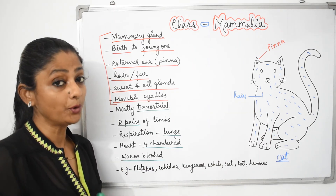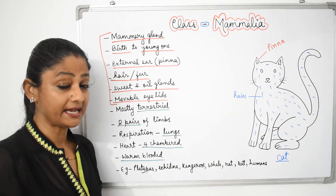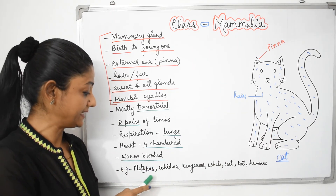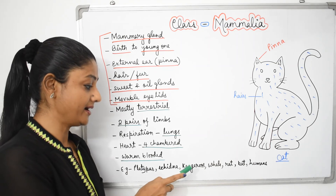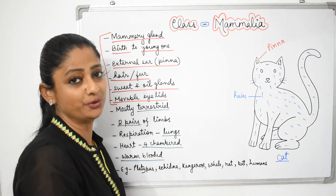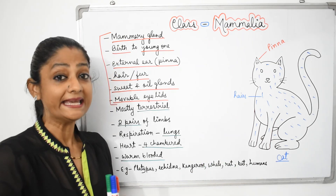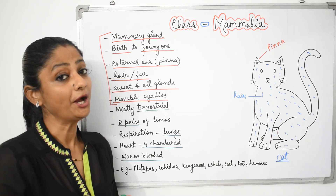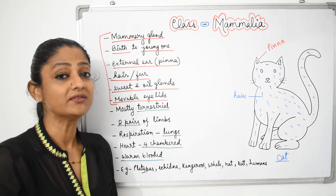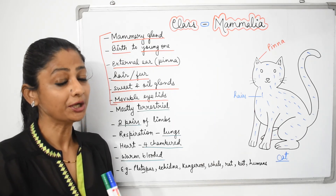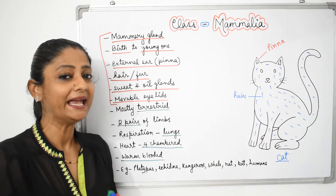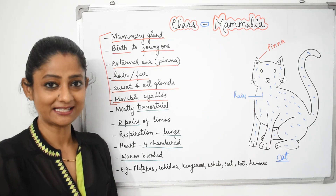They are mostly terrestrial. They have two pairs of limbs. Lungs are well-developed for respiration. Their heart is four-chambered, and they are warm-blooded animals. Our book gives examples: platypus, echidna, kangaroo, whale, rat, bat, and humans. With this, our chapter Diversity in Living Organisms is complete. We will meet in the next class with the next chapter.